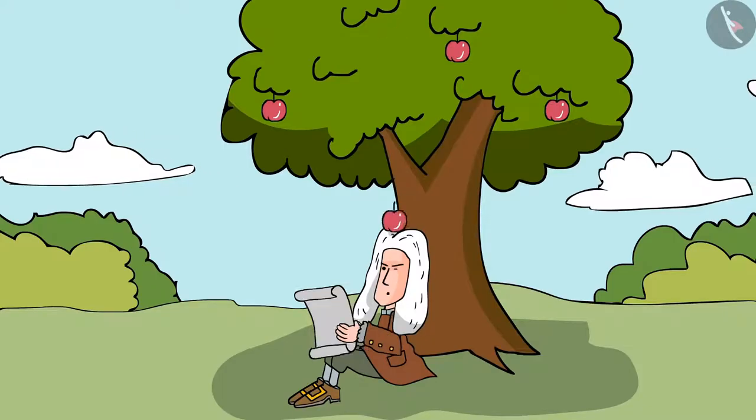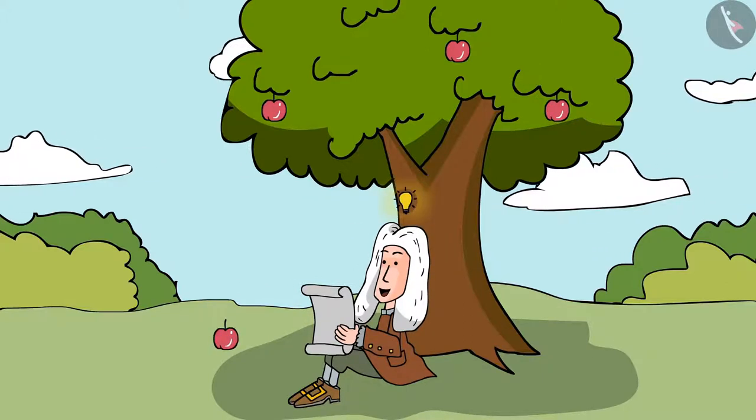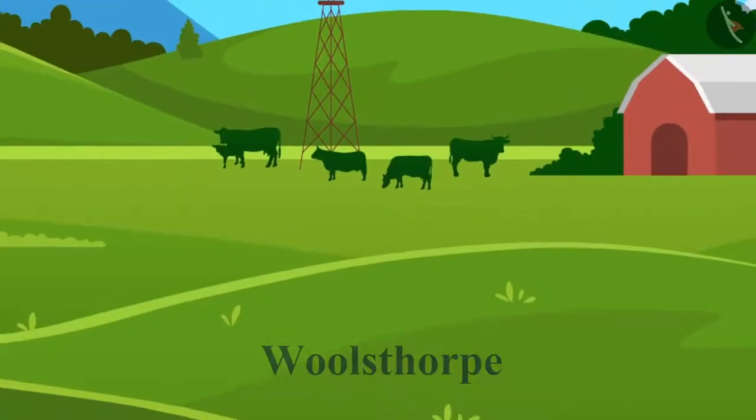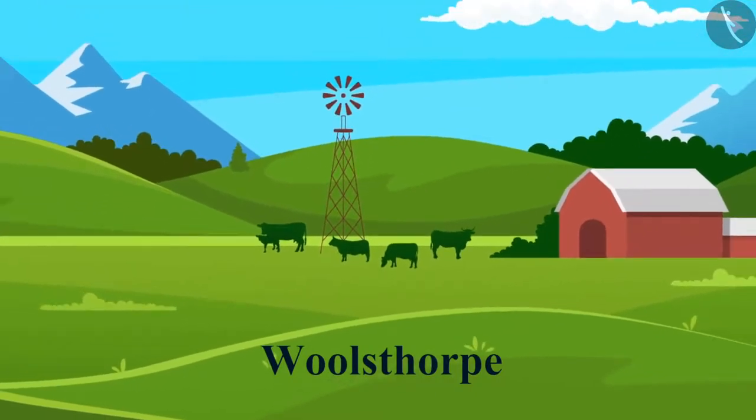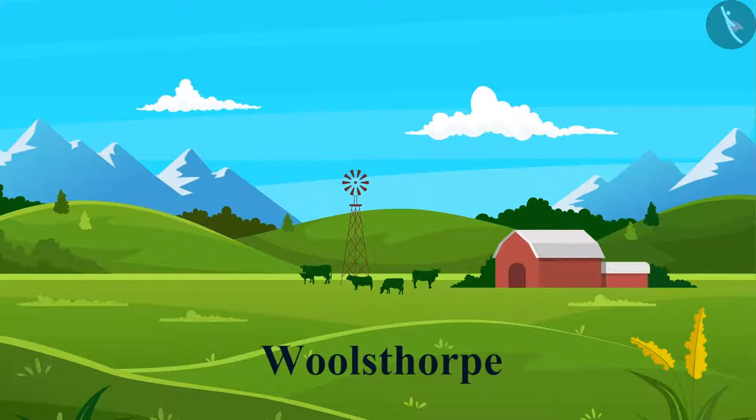Earlier, we learned how Isaac Newton discovered the laws of gravity. Let's now know a bit more about him. Sir Isaac Newton was born in Woolsthorpe near Grantham, England. He was born in a poor farming family, but he was not very good at farming.